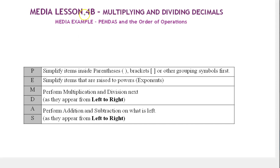In this last video for Media Lesson 4B, we're going to look at PEMDAS and the order of operations for decimals. The same order of operations apply for decimals as they did for whole numbers and integers. We use the mnemonic PEMDAS: P means simplify items inside parentheses or grouping symbols first, then exponents, then multiplication or division left to right, then addition or subtraction left to right.